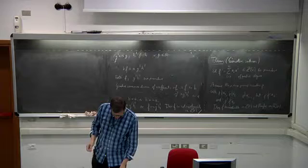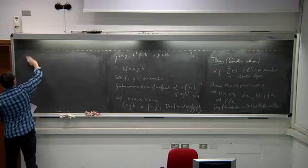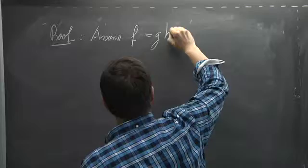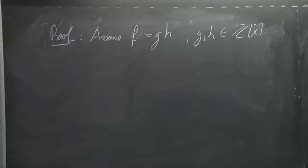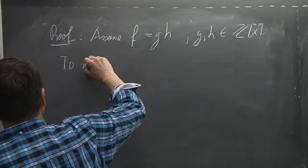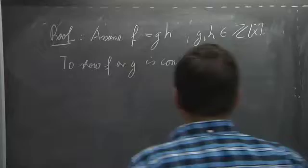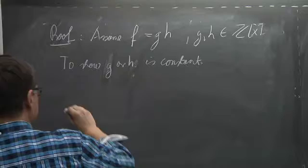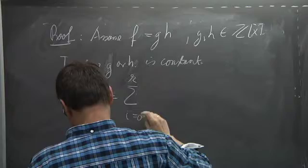Proof: assume f equals gh with g and h integer polynomials, and we must show one of them is constant. Write g equals sum b_i x^i and h equals sum c_i x^i. Since p divides a_0 equals b_0 c_0 but p squared does not divide a_0, p divides exactly one of b_0 and c_0.